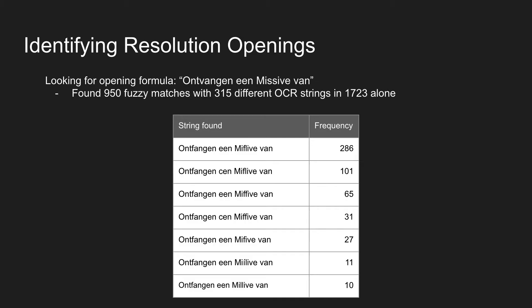For identifying the openings of resolutions, here you see the results for the year 1723, for which we find 950 fuzzy matches for the formula 'ontfangen een missive van.' These match with 315 different OCR strings. This shows two parts of the problem with searching in text with historical language variation and OCR errors: the total number of different OCR strings is huge, and even the most frequent one gives access to only about 30% of all matches.